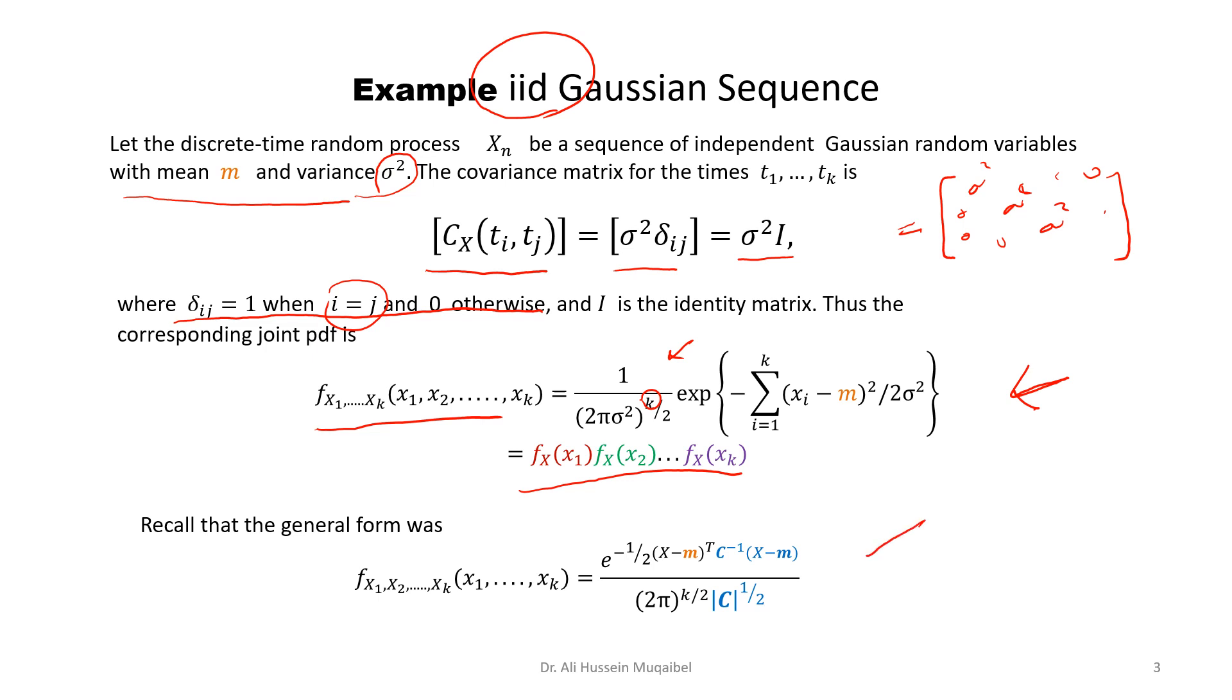Otherwise, you can always go to the definition, which is the joint PDF for all the cases. So this is a special case for IID. Otherwise, we can use the formal format where we substitute for the covariance and so on. This is regarding the Gaussian sequences or the Gaussian random processes.